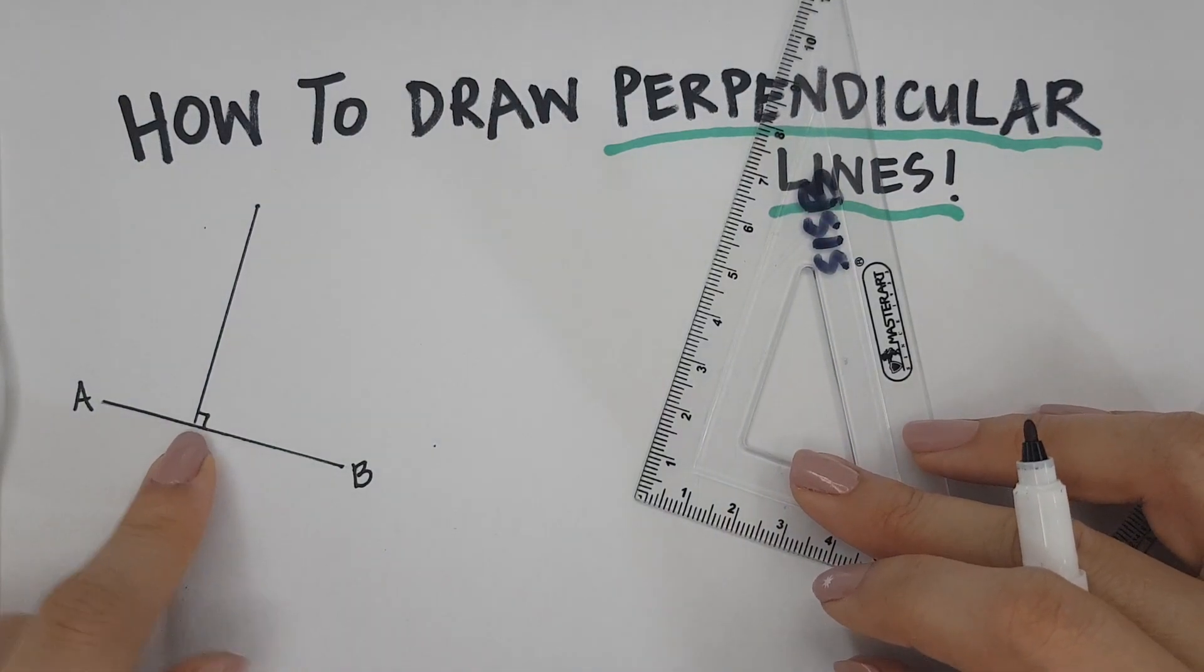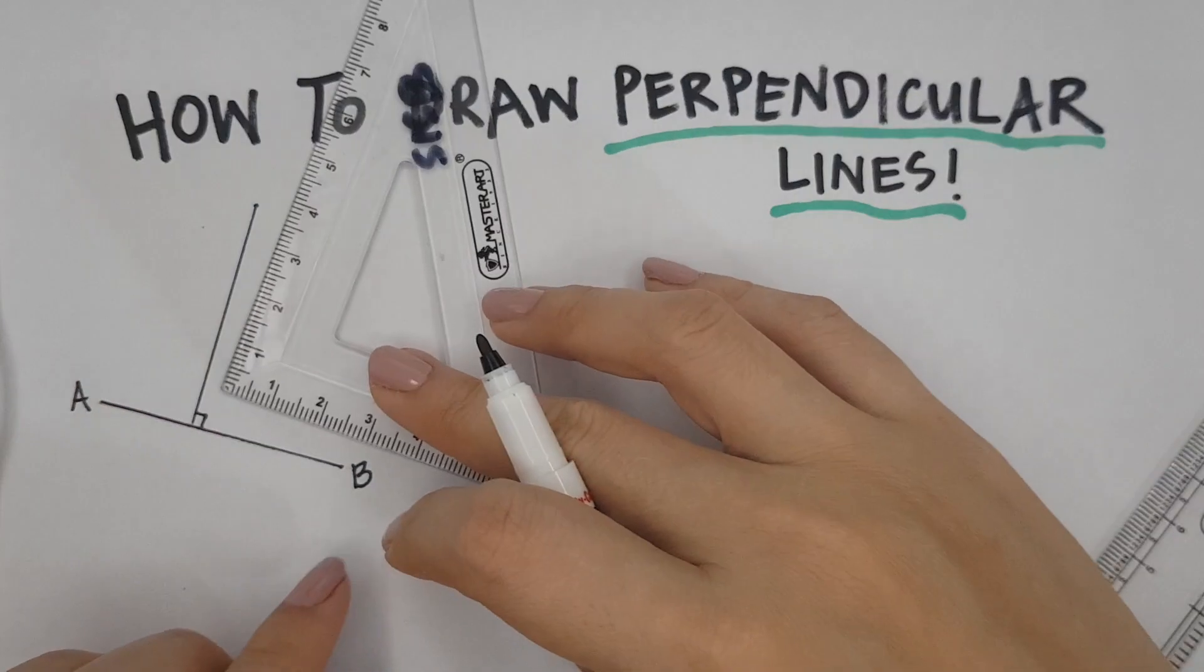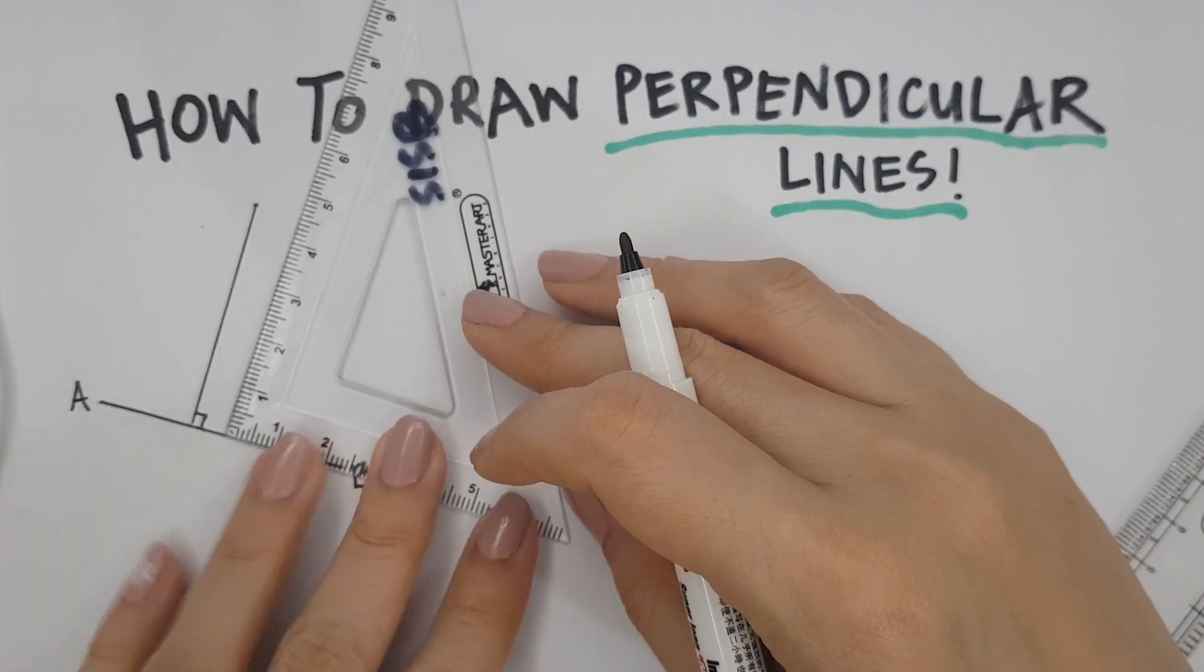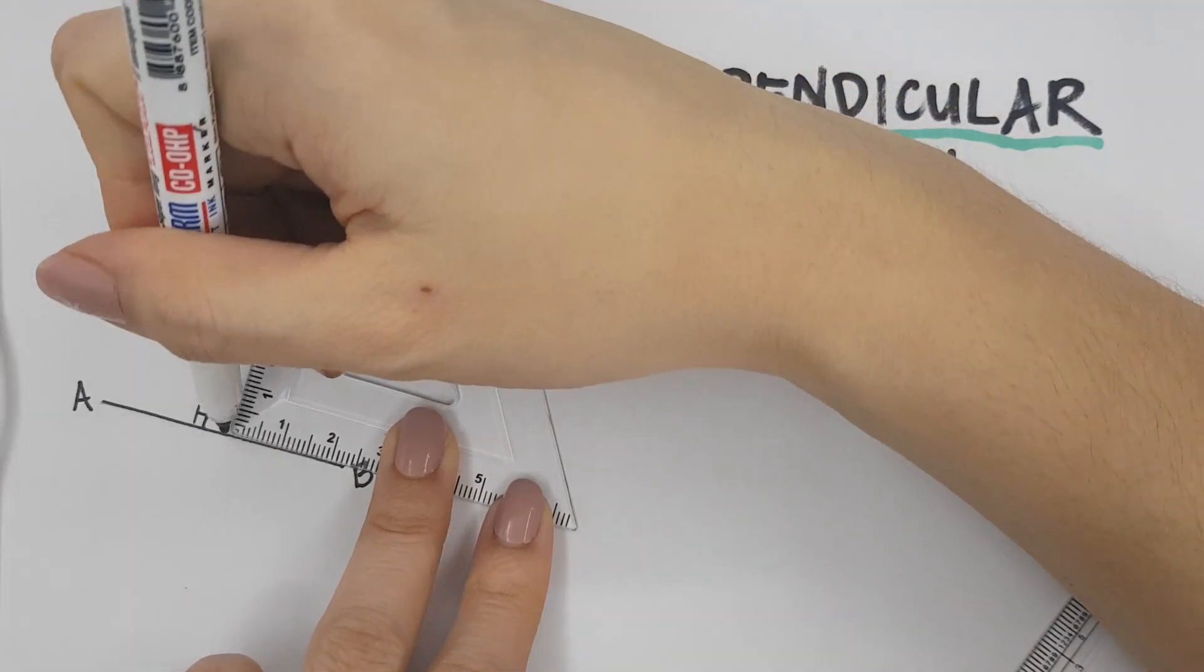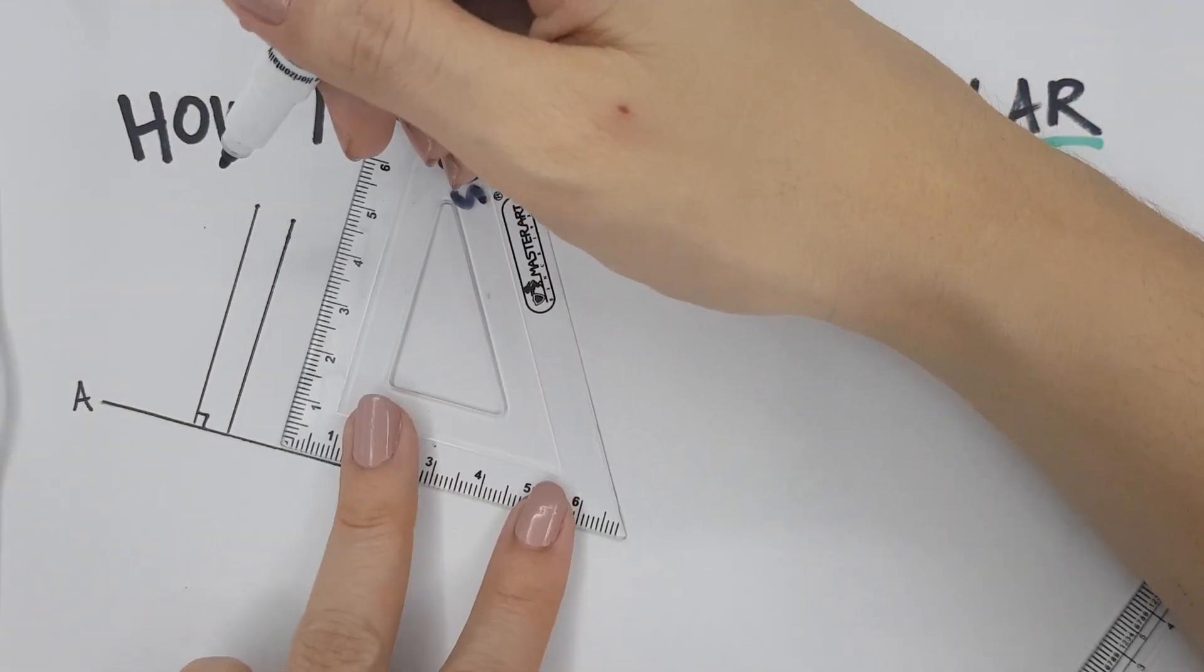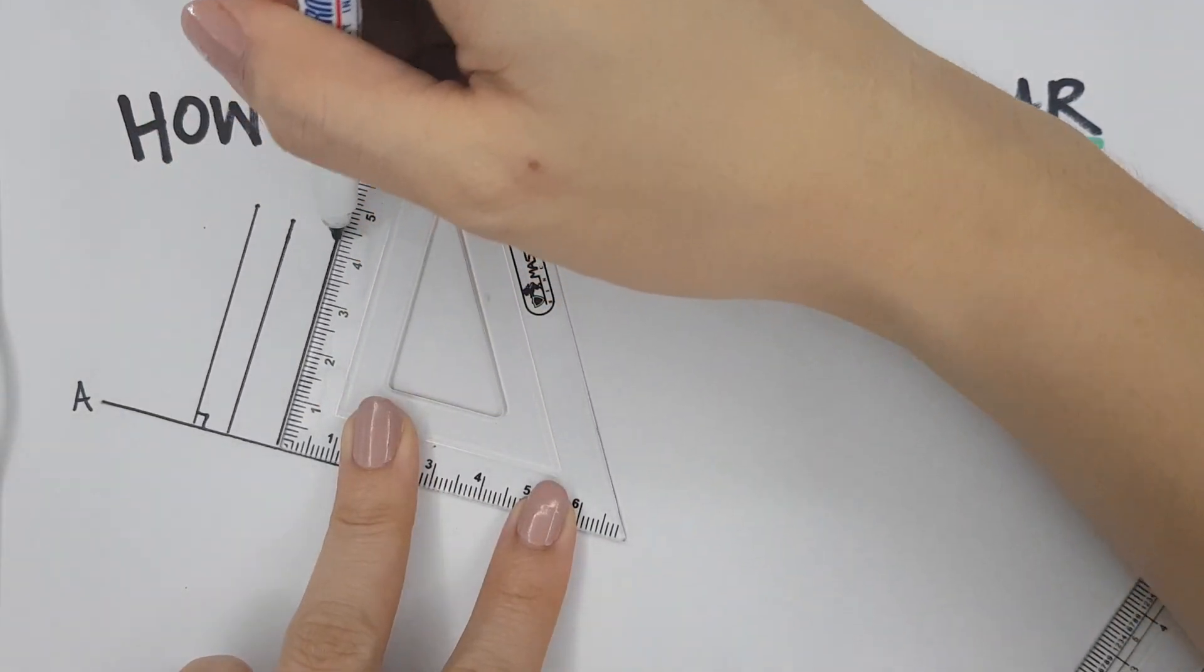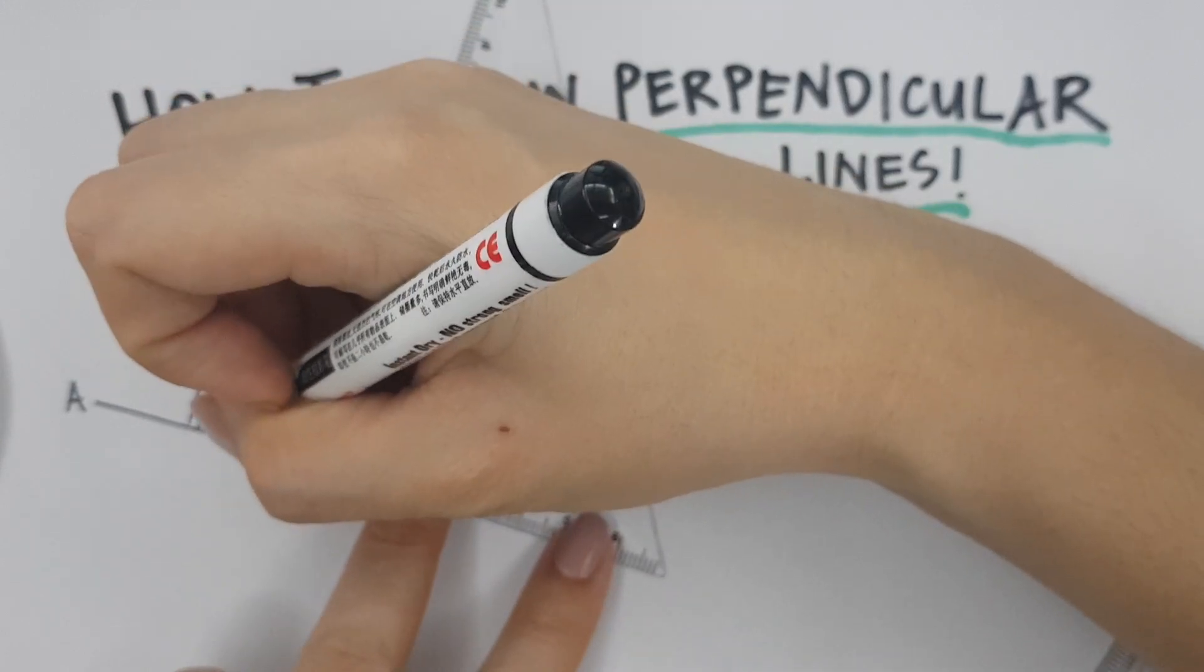Now, how many perpendicular lines are there? There are so many perpendicular lines. Look, anywhere that I put my set square, there is another perpendicular line. Another perpendicular line. There are so many perpendicular lines.